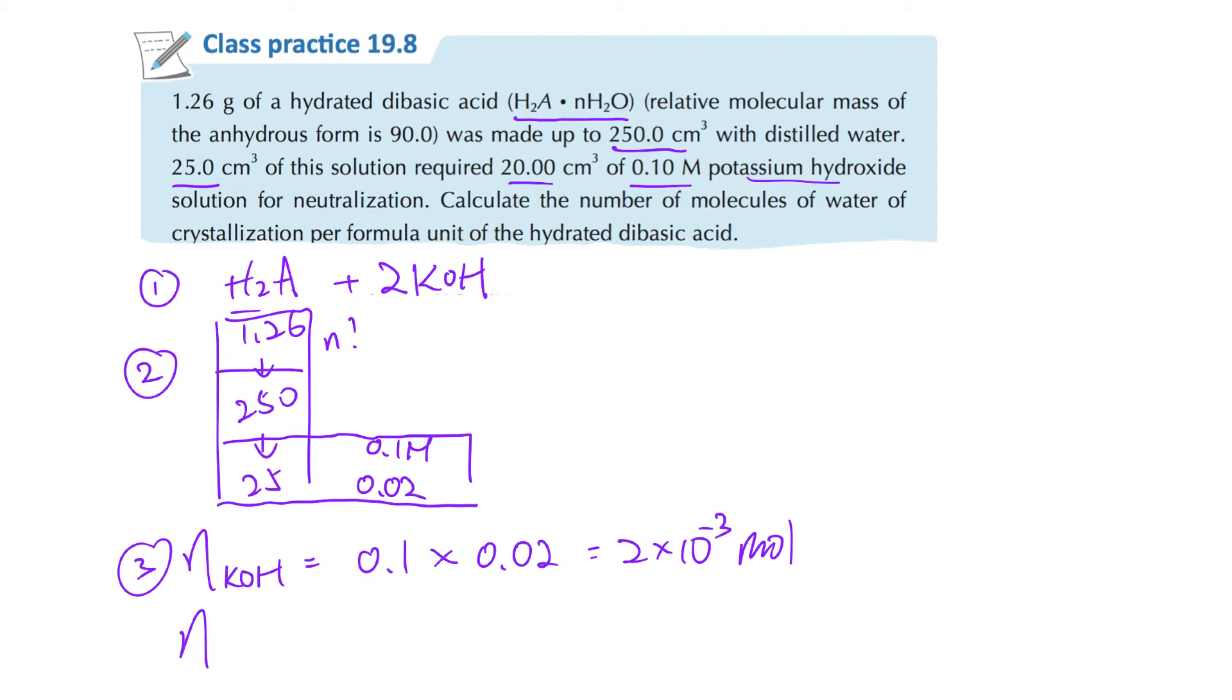And then for number of moles of H₂A, that will be 2 times 10 to negative 3 divided by 2 times 1. So this one will be 1 times 10 to negative 3 mole. And then for part 4, we're going to find this one.